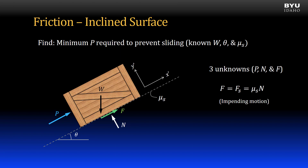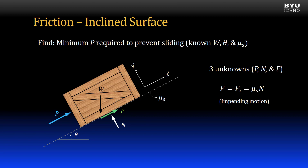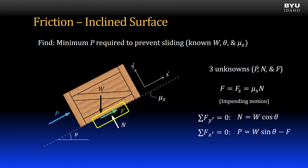Note that when I apply my equilibrium equations, I use an axis system that has been rotated, so that the x-axis — I will call it the x' axis — is parallel to the plane. I do this simply for convenience, to reduce the number of trigonometric functions in my equations. When I sum forces in the y' direction, I find that the normal force is equal to a component of the object's self-weight. When I sum forces in the x' direction, I find that the applied force is equal to a component of the self-weight minus the friction force. Note the direction of the friction force — it is pointing up the incline. If the crate is about to slide down the incline, then the friction force will act in a direction opposite to that impending motion, so pointing up the incline in a direction to prevent sliding.